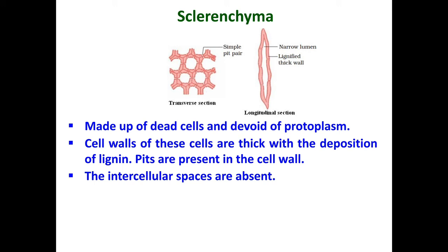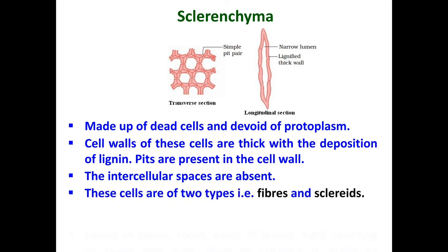The cells of sclerenchyma are of two types: fibers and sclereids. Fibers consist of very long, narrow, thick, and lignified cells, and they are pointed at both ends. Sclereids, also called grit cells or stone cells, are irregular in shape and form the gritty part of most fruits, contributing hardness to the seed coat and nut shells.